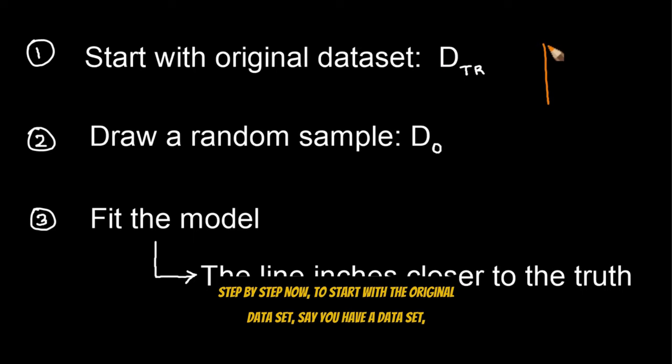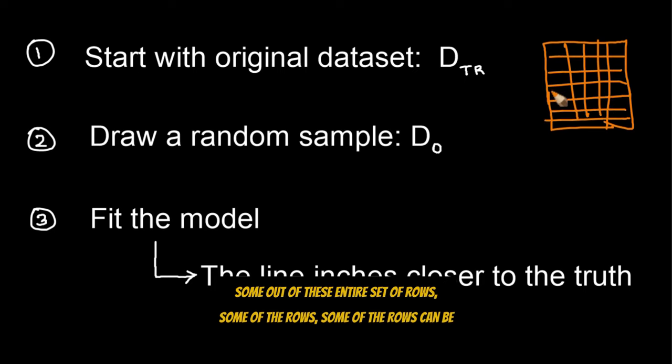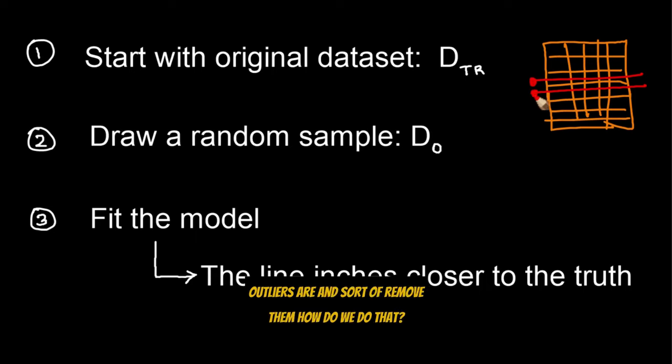You have different columns in the data set, right? Some out of these entire set of rows, some of the rows can be outliers. Our ultimate aim, we are going to use RANSAC to find what these outliers are and sort of remove them. How do we do that?